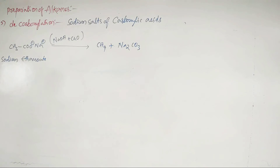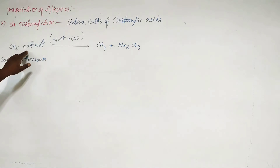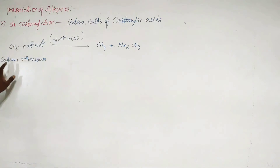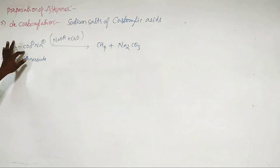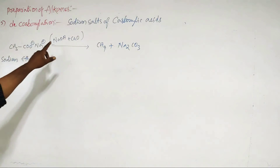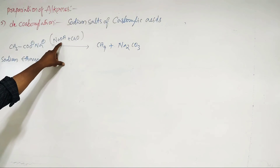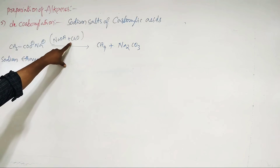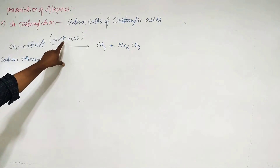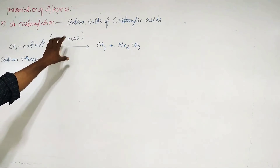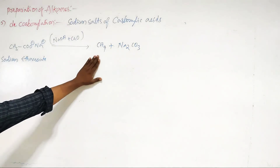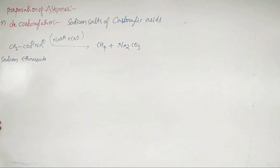By following this decarboxylation method, carbon dioxide is removed from the sodium salts of carboxylic acids by using sodium hydroxide and calcium oxide (soda lime), and we get alkane as the product.